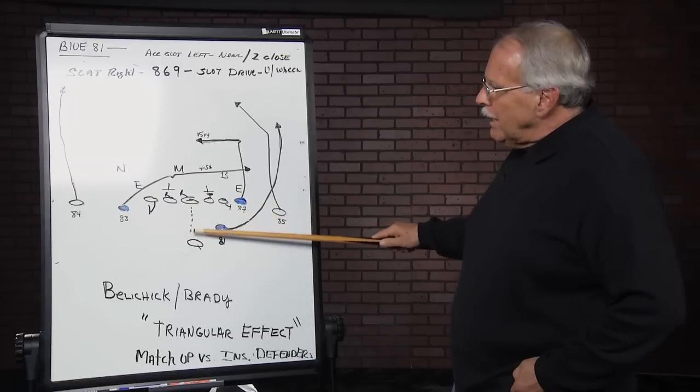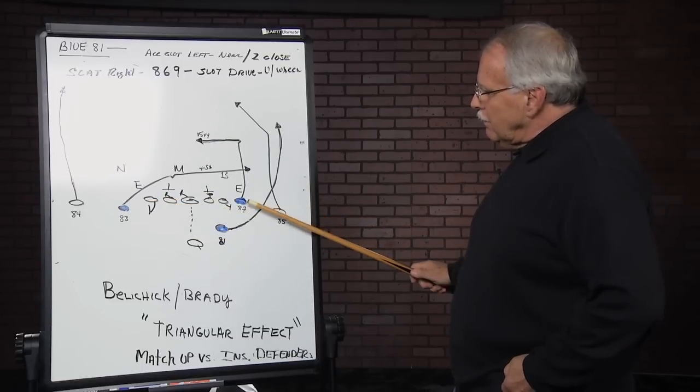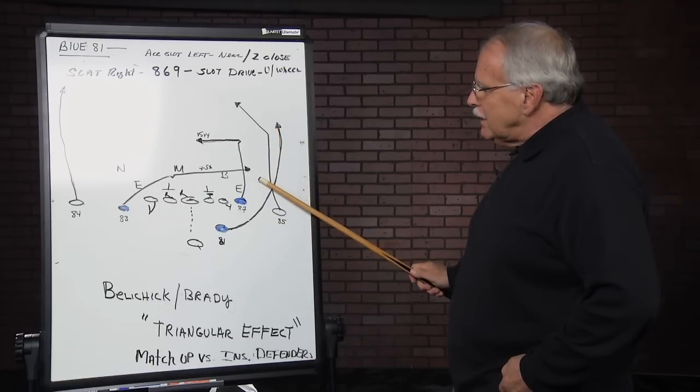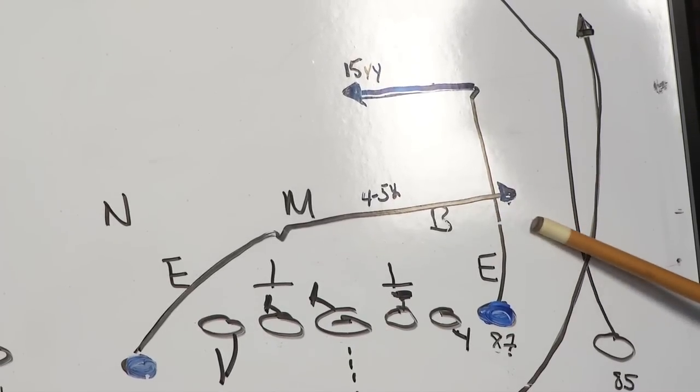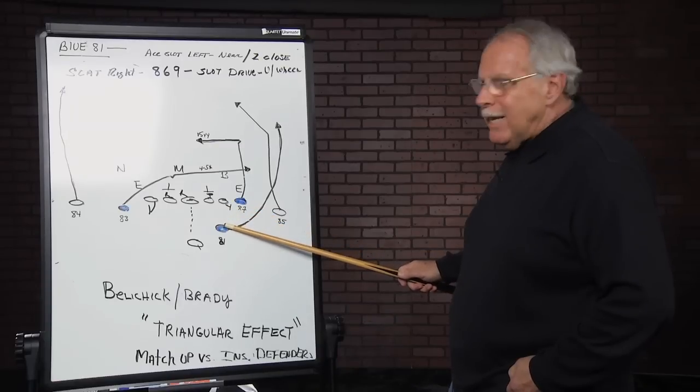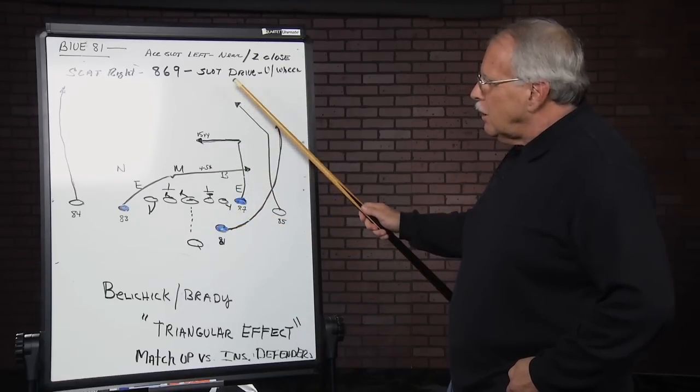Now if you analyze the play, what you have is you have a tight or near spot here with Lloyd. And Lloyd is going to run the post. Now the reason he gets in here tight is to create kind of a confusion, to create bodies in here so that if a linebacker is one-on-one with Hernandez, he can get a natural rub. Otherwise, he's going to clear the post.